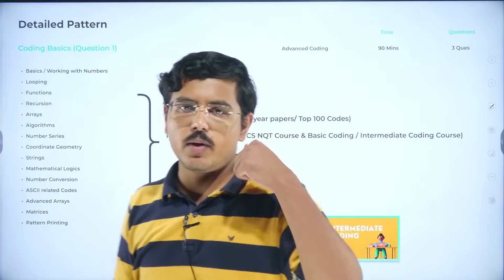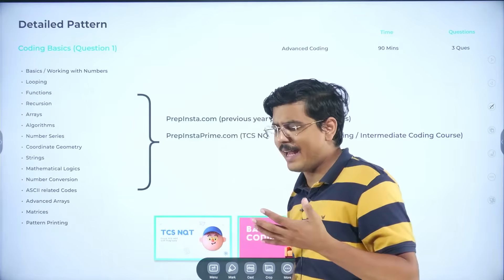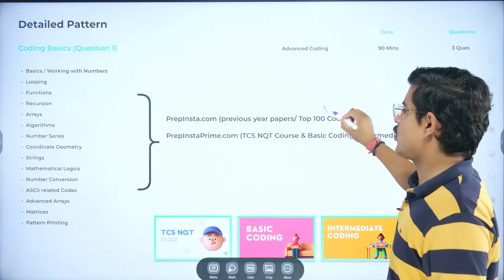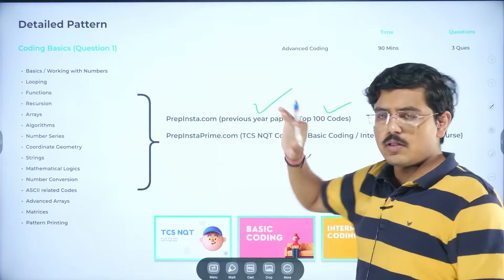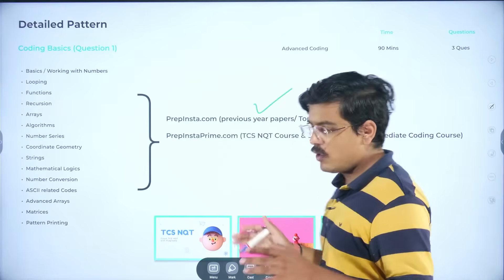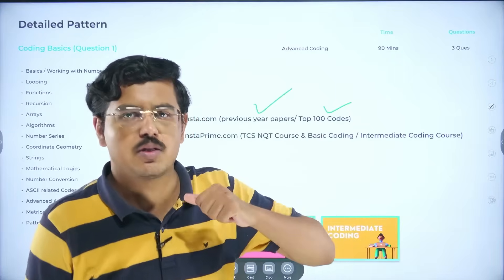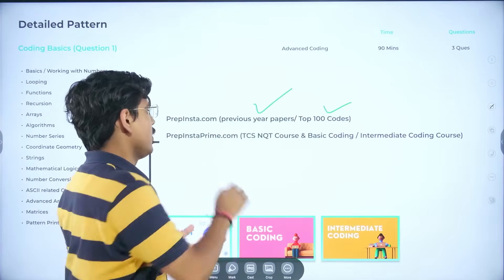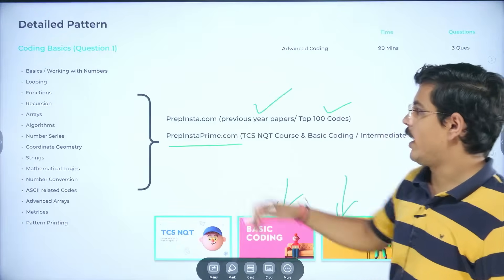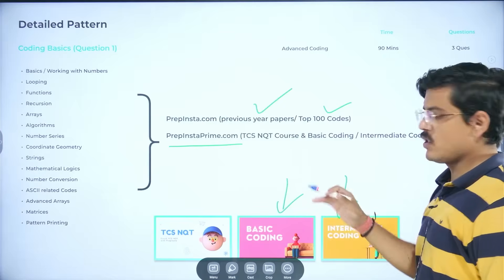In coding questions, the coding question 1 would generally have basics: working with numbers, looping, basic recursion, arrays, number conversion, strings, patterns, all this would be in coding basics and that can be covered using top 100 codes which is free of cost again for you. Previous year papers of TCS on prepinstaprime.com free of cost for you and full length mocks if you want or you want complete structured code course explaining everything you want. The beginner coding which is the basic coding and intermediate coding would help you in the coding basics which is the question 1 of the exam. And generally, these two courses would be enough for it.